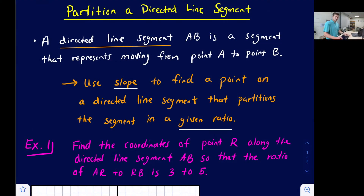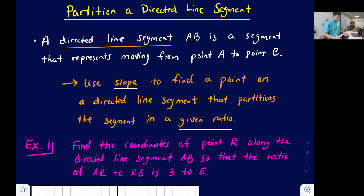Hello everyone. In this video we're going to look at how to partition a directed line segment. We'll start with the definition: a directed line segment is a segment AB that represents moving from point A to point B along that segment.